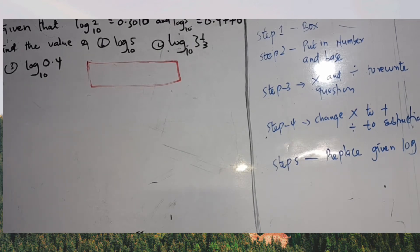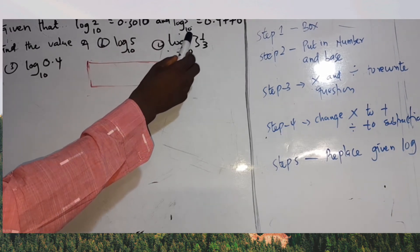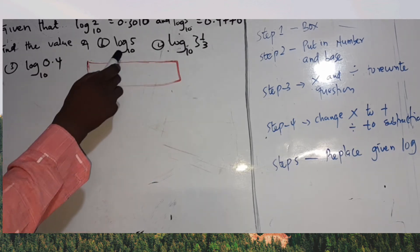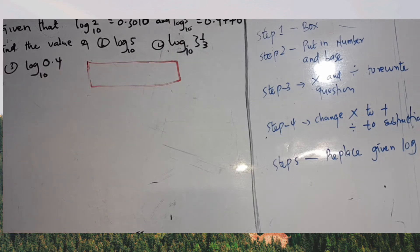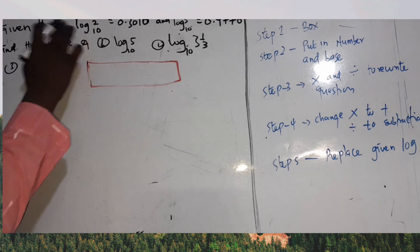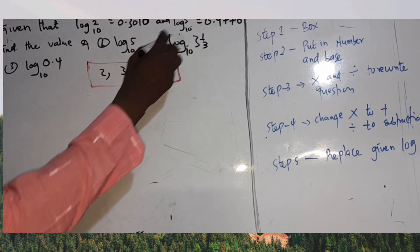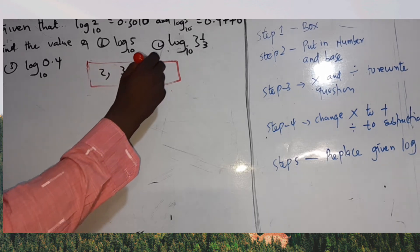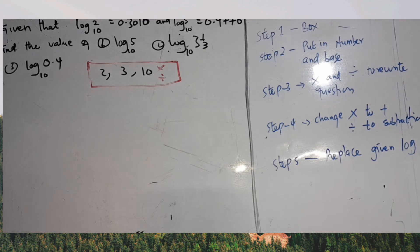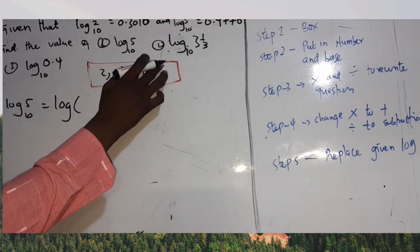Now let's look at a different example. Given that log base 10 of 2 equals 0.3010 and log base 10 of 3 equals 0.4770, find the value of log base 10 of 5, log base 10 of 3⅓, and log base 10 of 0.4. The numbers for our magic box are 2, 3, and the base 10. We use only multiplication and division.